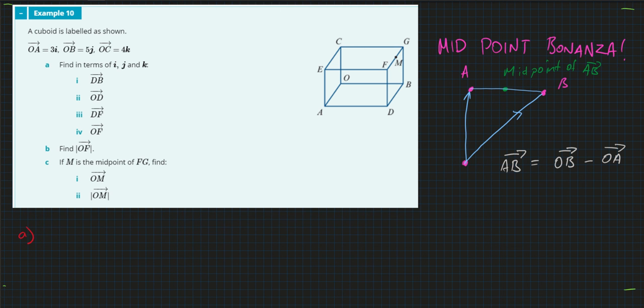Part A, so we have these O to A's and O to B's and O to C's which are on the initial components. That's obviously three and O to B is five long and O to C is four long. So in terms of i, j, k, I need to find D to B. Because we're going in the negative direction,